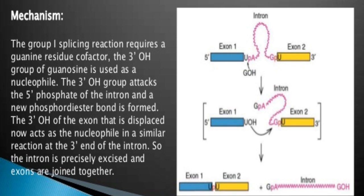Mechanism of Group 1 splicing: the Group 1 splicing reaction requires a guanine residue cofactor. The 3' OH group of guanosine is used as a nucleophile, which attacks the 5' phosphate of the intron, and a new phosphodiester bond is formed. The 3' OH of the exon that is displaced now acts as a nucleophile in a similar reaction at the 3' end of the intron, so the intron is precisely excised and the exons are joined together.